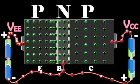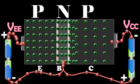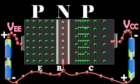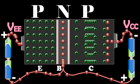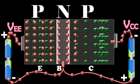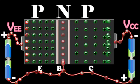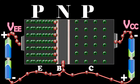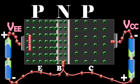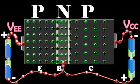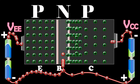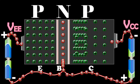The remaining number of holes which do not undergo the recombination process in the base reach the collector. These are neutralized by an equal number of electrons flowing from the negative terminal of the battery VEE into the collector.